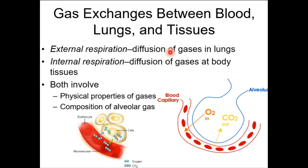When we carry oxygen bound to hemoglobin to all the tissues in the body, oxygen is then exchanged with your cells, and they give back carbon dioxide — that is called internal respiration. This is why respiration is so different from ventilation: we have internal respiration as a separate concept.